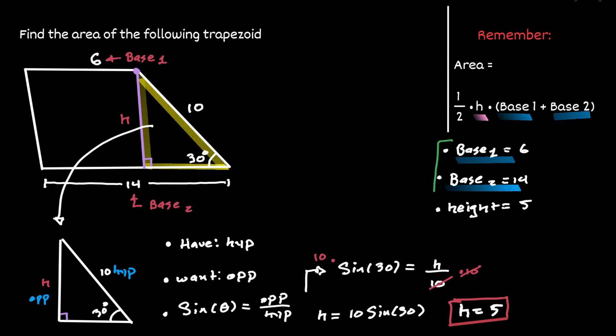Now if we use the information that we have just gathered and plug it into our formula we should be able to find the area. One half times the height which we found to be 5, times the addition of both bases.